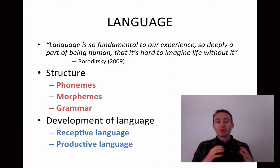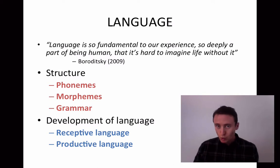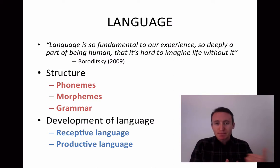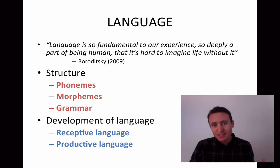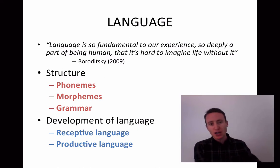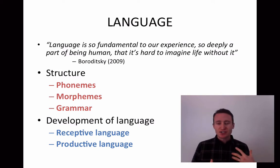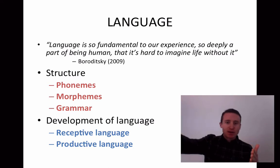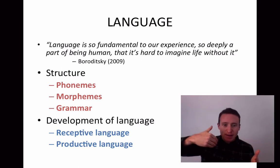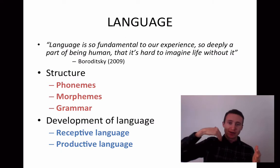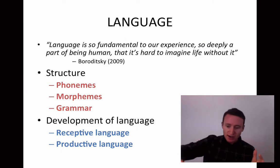Before we can actually produce language, we are in what's called the receptive language phase. This is the idea that as a newborn or infant in the first few months of life, we can understand when people are talking to us. For example, by six weeks of age, babies understand that people are making eye contact with them. So babies can receive language before they can produce it.